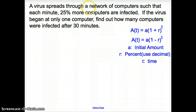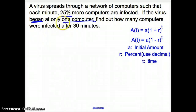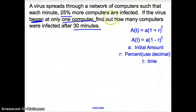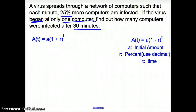Let's take a peek at what one of these looks like. A virus spreads through a network of computers such that each minute 25% more computers are infected. That's a percent. If the virus began at only one computer — 'began' tells me it's a starting amount — find out how many computers were infected after 30 minutes. Are we going to use growth or decay? Well, it's spreading, it's getting bigger, so we are going to use growth.